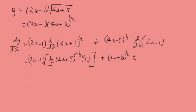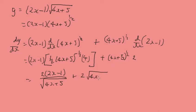Now we tidy all this up: 4 divided by 2 is 2, so we have 2(2x minus 1) over (4x plus 5) to the power of a half, plus 2(4x plus 5) to the power of a half. This looks a bit messy, so what we're going to do is combine it into one fraction.